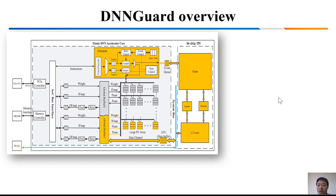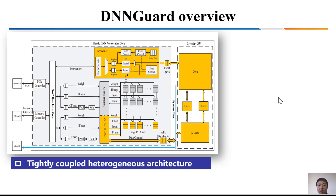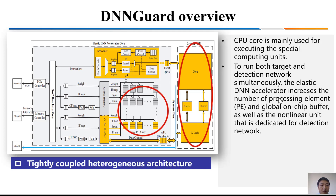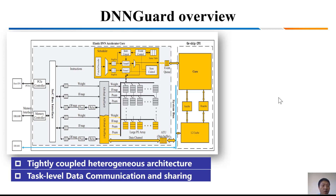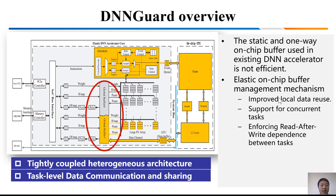Here is the overview of the DNN Guard architecture. It's a tightly coupled heterogeneous architecture. The CPU core is mainly used for executing special computation. To run both the target and detection network simultaneously, the elastic DNN accelerator increases the number of PEs and the global on-chip buffer, as well as a non-linear unit dedicated for the detection network. The second feature is task-level data communication and sharing. Existing DNN accelerators use static one-way on-chip buffers, which is not suitable for this new architecture. Thus, we propose an elastic on-chip buffer management mechanism that improves local data reuse and supports concurrent tasks.